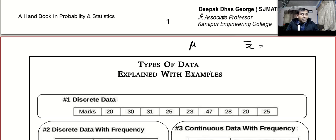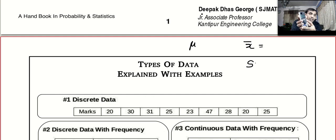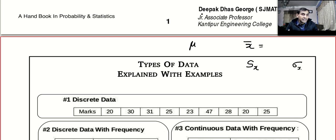When it comes to standard deviation, your calculator gives you two things. You can use the down button — if you press it you will come across two characters: sx and sigma x.